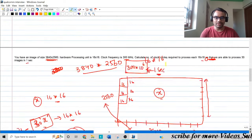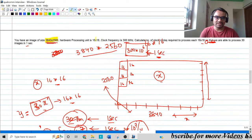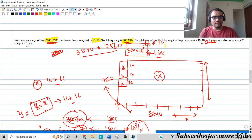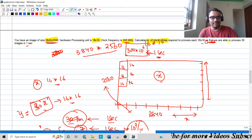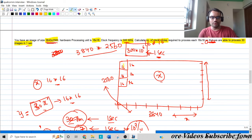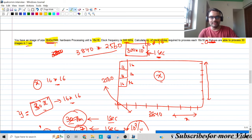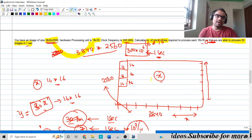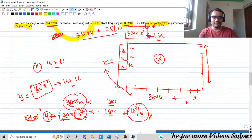Next question is like an image is given with a kind of resolution or size, and then the hardware processing unit is 16 by 16, and the clock frequency is given as 300 megahertz. The question is to calculate the number of clock cycles required to process each of these 16 by 16 small blocks so that we can process 30 images in one second. What is the number of clock cycles you require? You can break up the bigger picture into smaller blocks or pixels and then calculate it. It's a simple mathematical thing which you can do.